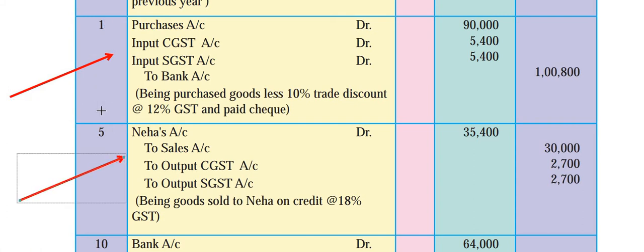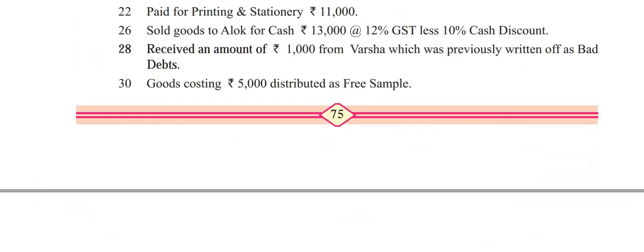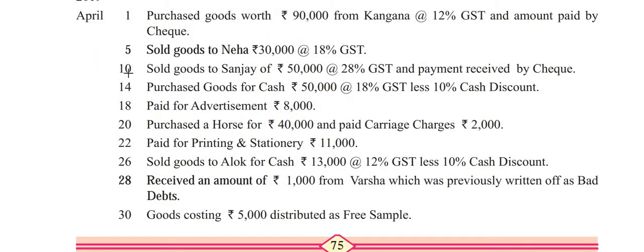This is how you are supposed to write it - we have already done such entries in previous videos, so this is now a revision. April 10th: sold goods to Sanjay for 50,000 at the rate 28% GST - that means 14% each for central and state GST - and payment received by cheque. Since payment is received by cheque, bank account debit, sales account credit, and output GST at 28% (14% central + 14% state).